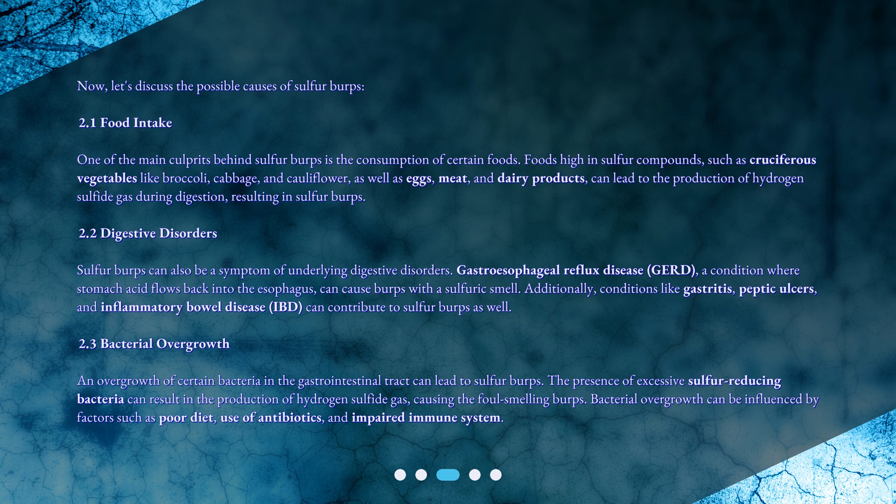An overgrowth of certain bacteria in the gastrointestinal tract can also lead to sulfur burps. The presence of excessive sulfur-reducing bacteria can result in the production of hydrogen sulfide gas, causing the foul-smelling burps. Bacterial overgrowth can be influenced by factors such as poor diet, use of antibiotics, and an impaired immune system.